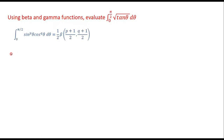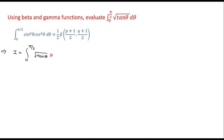Hello students. In this video, we evaluate the integral from 0 to pi/2 of root of tan theta d theta by using beta gamma functions. In beta gamma functions, we have the result: the integral from 0 to pi/2 of sin raised to p theta cos raised to q theta d theta is equal to 1/2 beta of (p+1)/2, (q+1)/2. The given integral, let me take it as I, it is the integral from 0 to pi/2 of root of tan theta d theta.